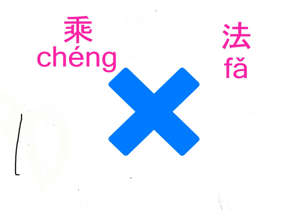每个小朋友都知道乘法表. Multiplication table is just a square table — my square is not very straight, but anyway you get the point. It is lined up with numbers 1 to 9, or 1 to 12, or 1 to 20. And this way is the same — that's just 1 to 9 on both axes.